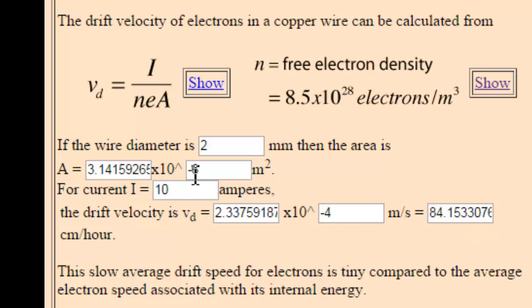We could try another value, let's try one amp. And what is that going to be? That's going to be 8.4 centimeters per hour. So there you have it, I think they will ask you a question like this. They will give you these parameters and ask you to calculate the drift velocity.